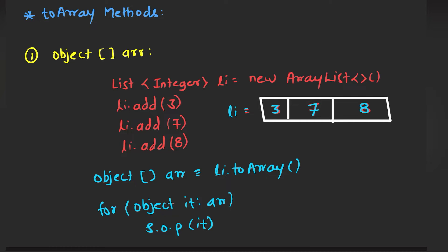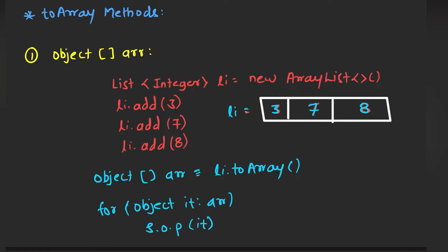So the question comes: can we convert these objects to the primitive data type called integer, character, or float? Yes, this can be done with the help of the toArray methods. The first method is the object array. How does it basically work? Let's check it out in more detail.